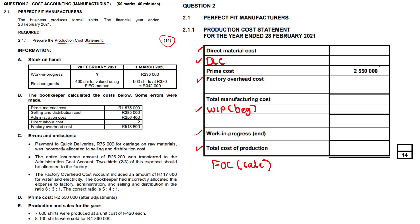The prime cost is given to us. What usually happens is they hide one or two figures, making the other a balancing figure. Direct materials we do have: 1,575,000. Looking at errors and omissions, there's a payment to Quick Deliveries of 75,000 rands for carriage on raw materials purchased, which was incorrectly allocated to selling and distribution cost. We add that 75,000 to our direct material cost, giving us 1,650,000 rands.